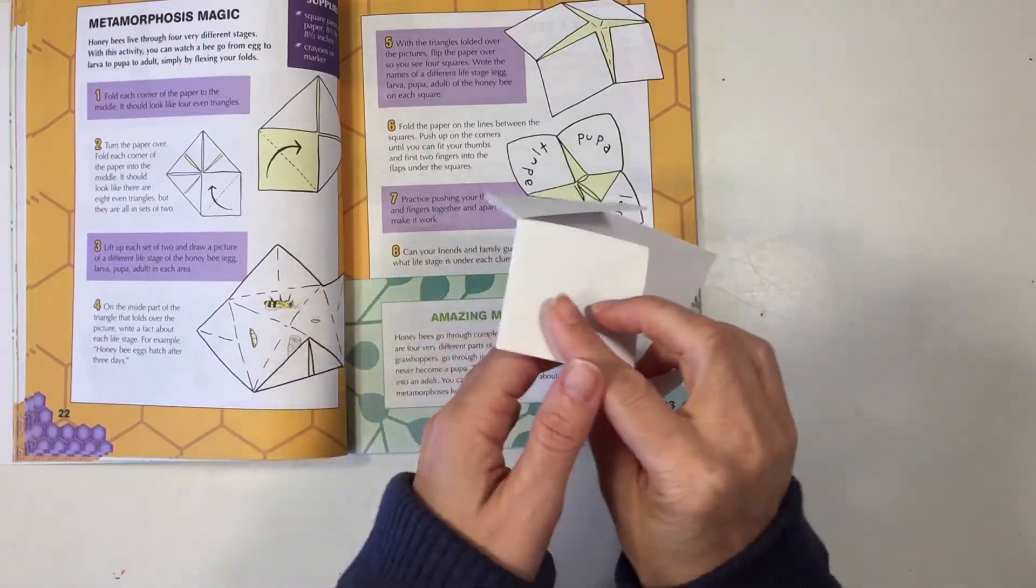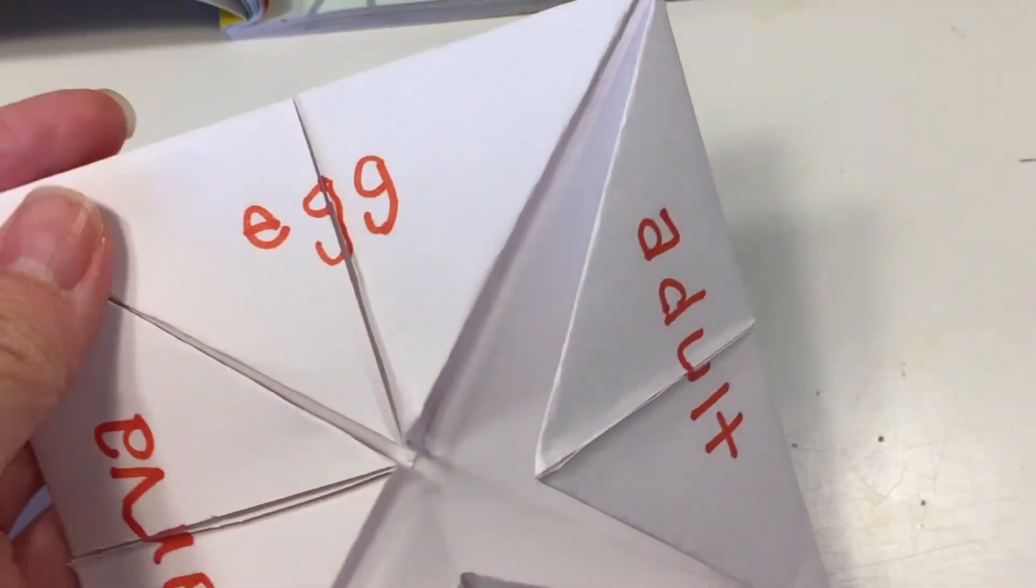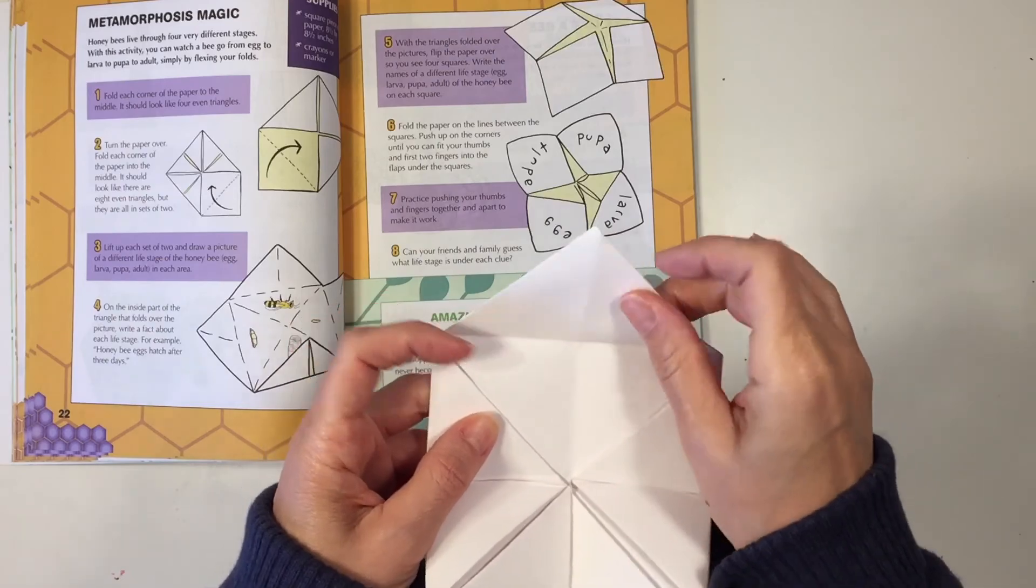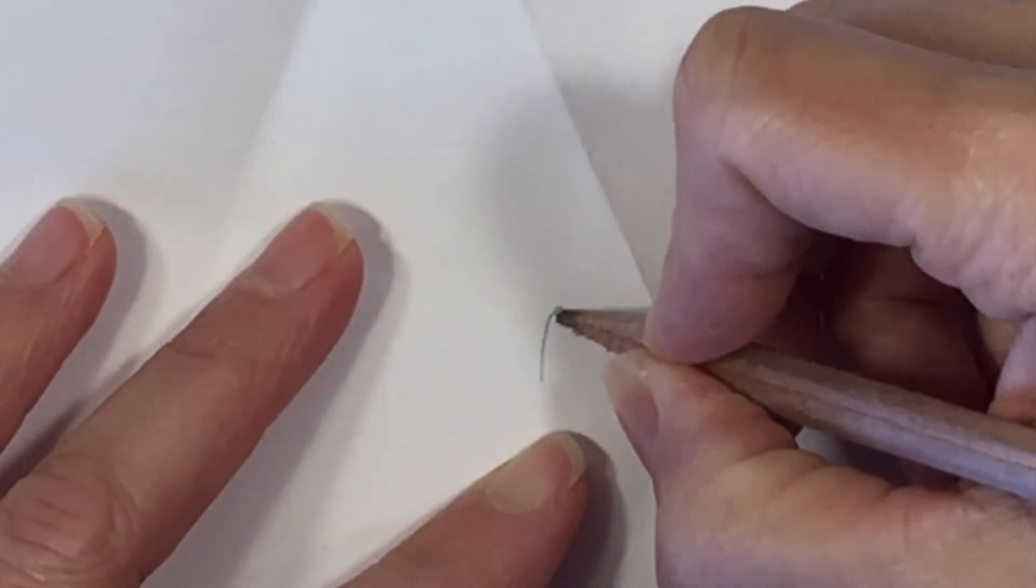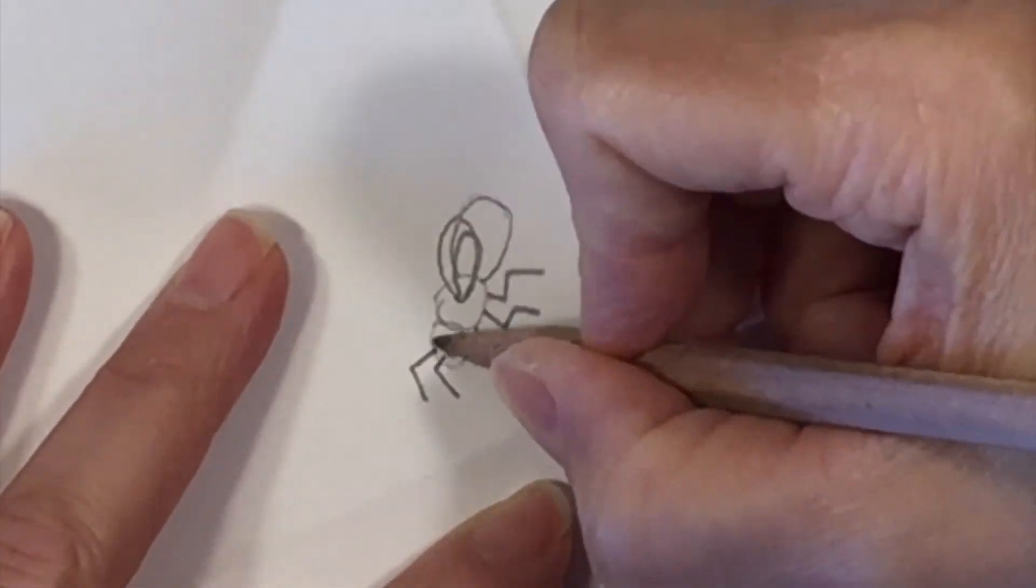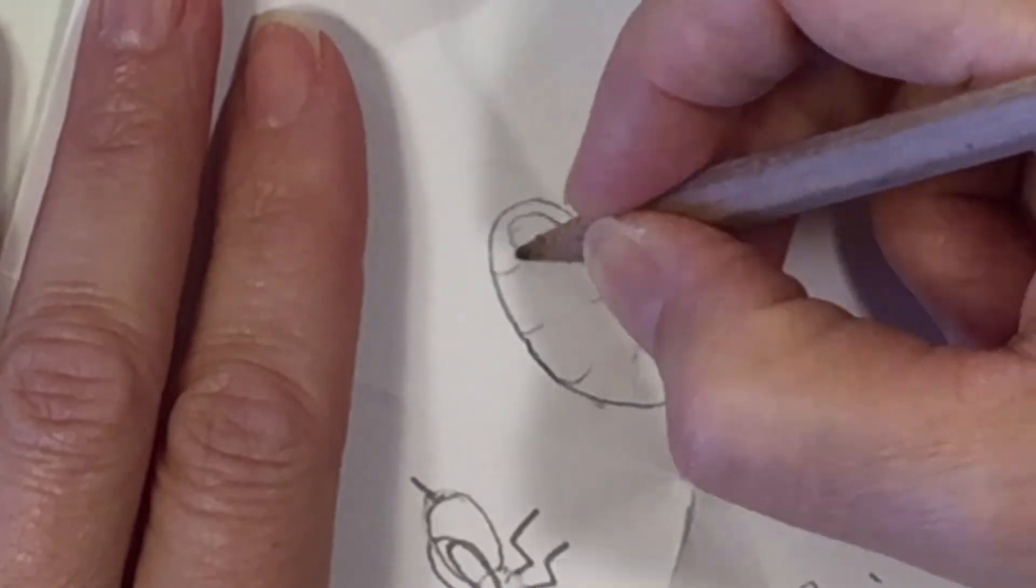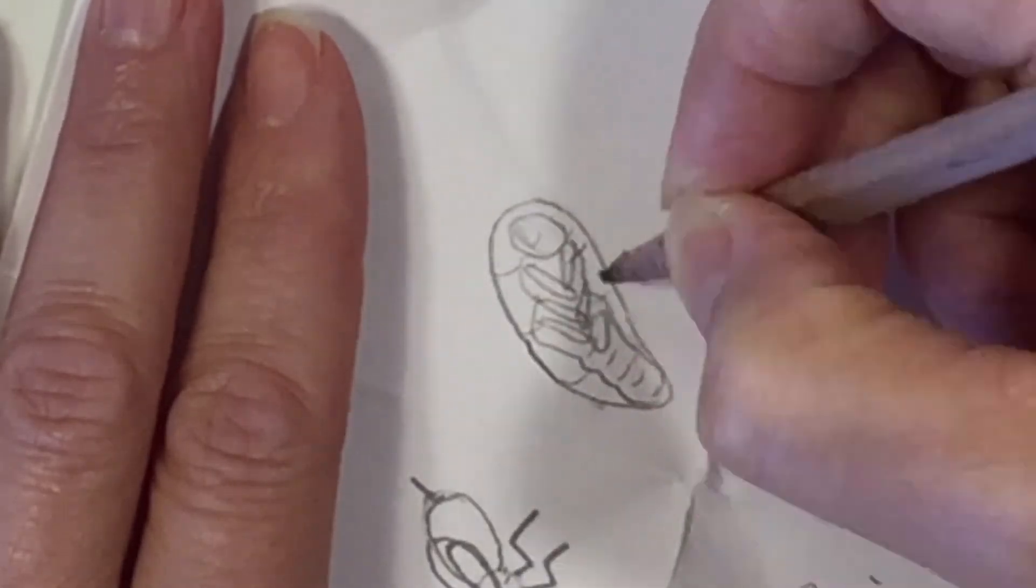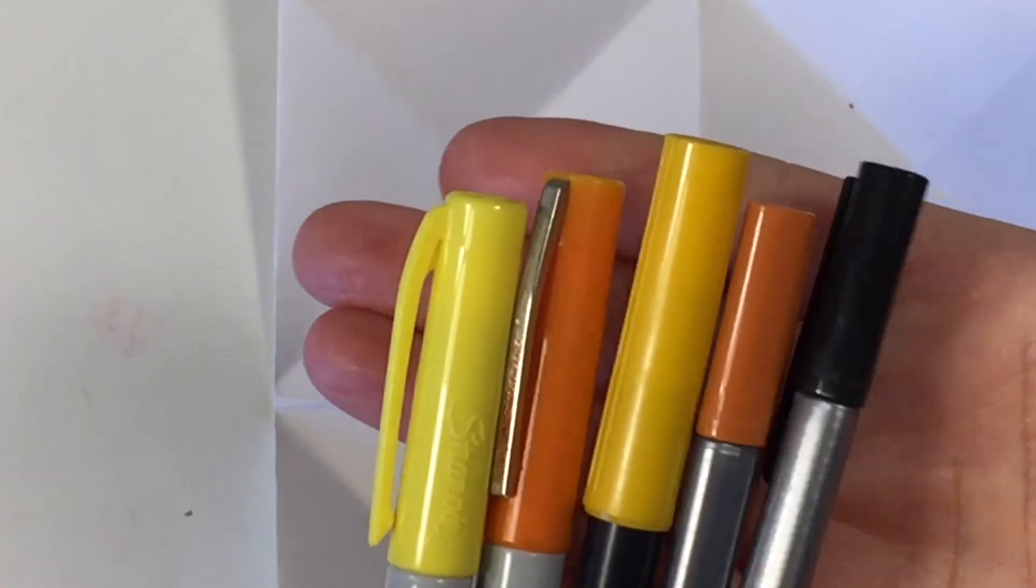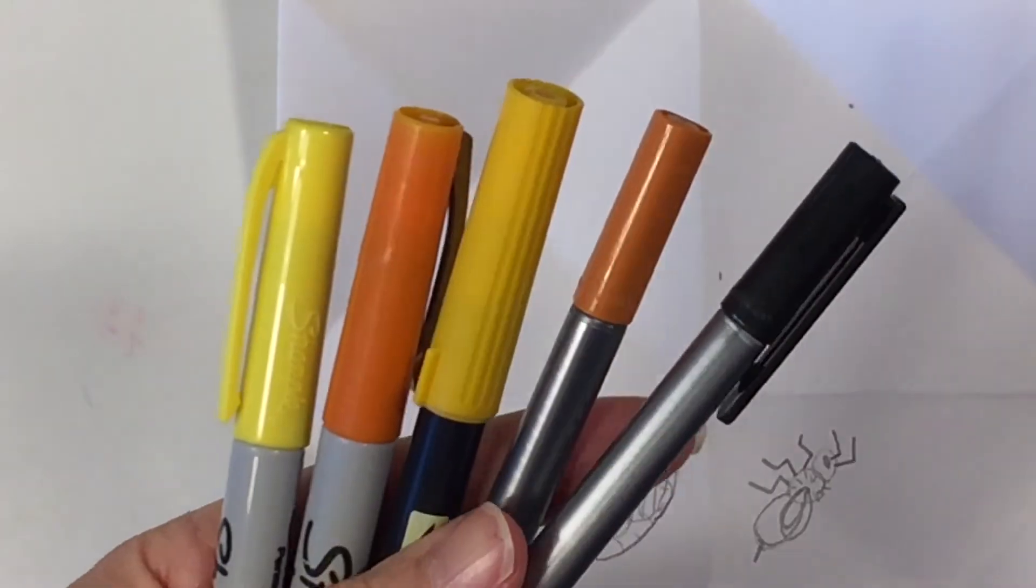The instructions show to write the different labels on the outside, but actually I'm going to go ahead and write them on the inside here, and then we're going to draw the little bee on the inside. Next I'm going to use a variety of ink pens in order to color them in.